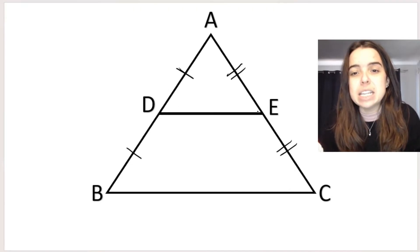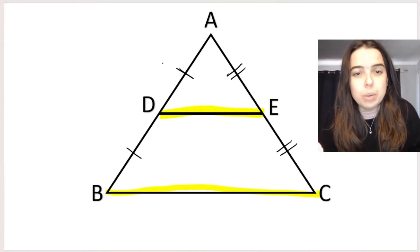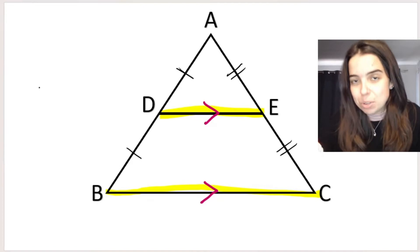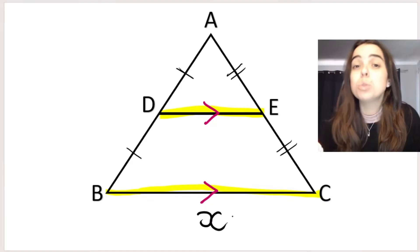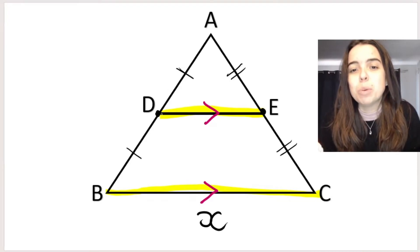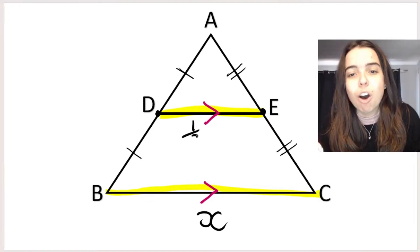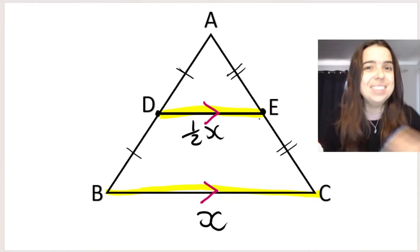First of all, the line DE, so this line over here, will be parallel to BC, this line over here, and we use these little arrows to indicate parallel. The second really cool thing that happens is: let's call BC X. What is also true, now that we've located the midpoint of AB being D and AC being E and connected them with a line, is that DE is half the length of BC. So I can represent DE as half X. Let's pretend BC was 20 centimeters long — DE would be 10 centimeters long.